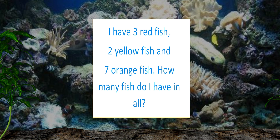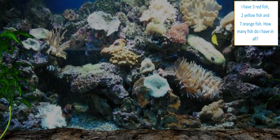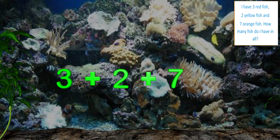In this problem we don't have just two numbers to deal with — we have three numbers. This might seem difficult, but I know we can do it. We will need to add three different addends or numbers together. To start, I will write an equation: three red fish plus two yellow fish plus seven orange fish equals the number we do not know yet. The question is asking how many fish we have altogether, which means we need to add them together.